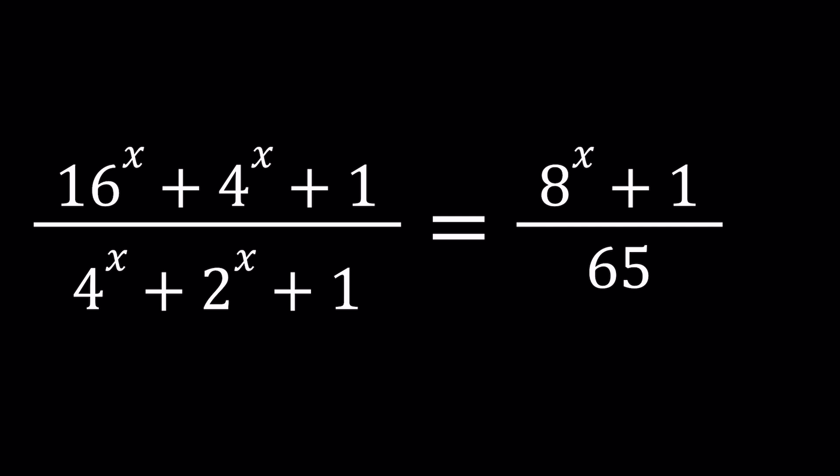We have 16^x + 4^x + 1 all over 4^x + 2^x + 1, and that equals 8^x + 1 divided by 65. We're going to be solving for x values. Let's see how we can solve a problem like this.